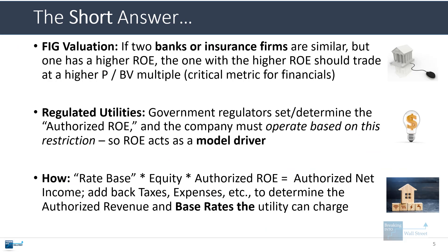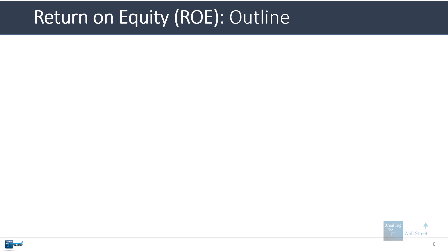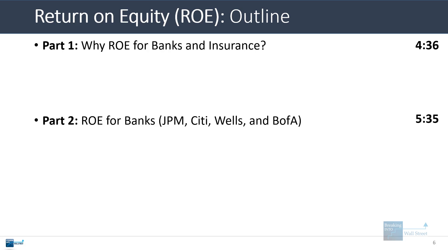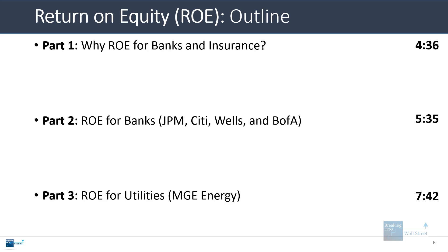So that's the very short answer of how you use return on equity. For the rest of the tutorial, I'm first going to speak briefly about why ROE matters for banks and insurance companies. We'll go through examples looking at the top four biggest commercial banks in the US and see how ROE and price-to-book value multiples compare. Then we'll look at ROE for utilities and go through the MGE Energy example, actually calculating each step of the process.